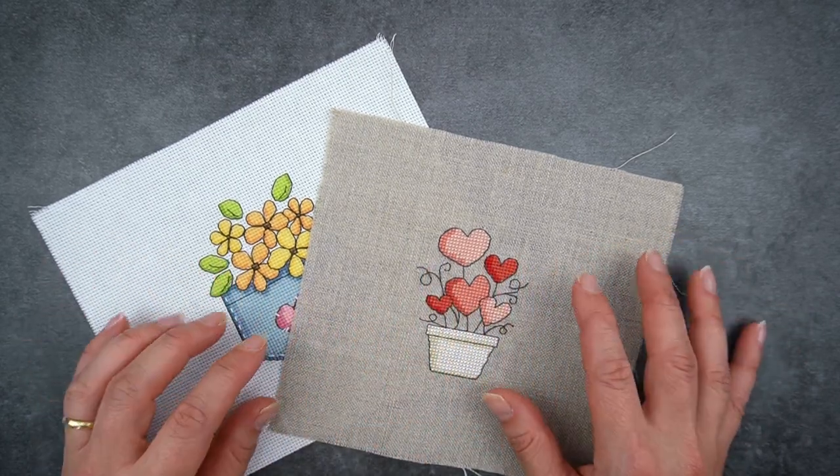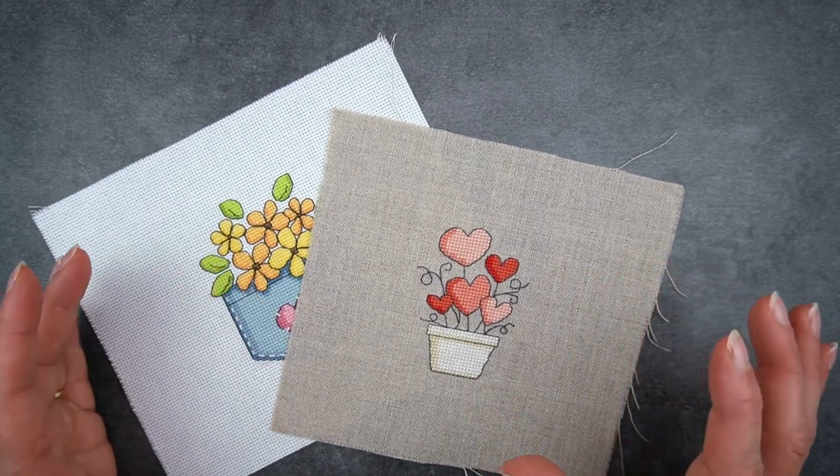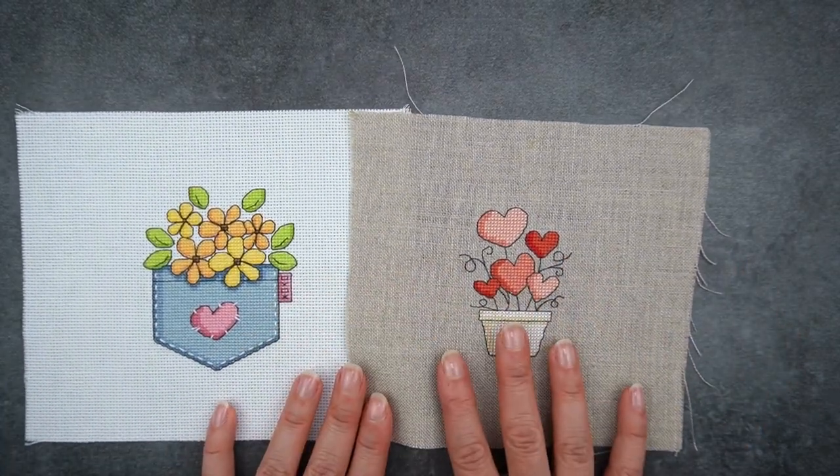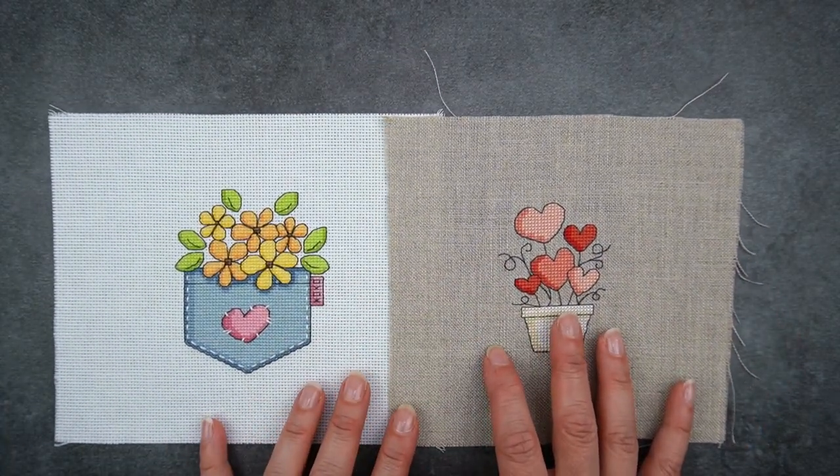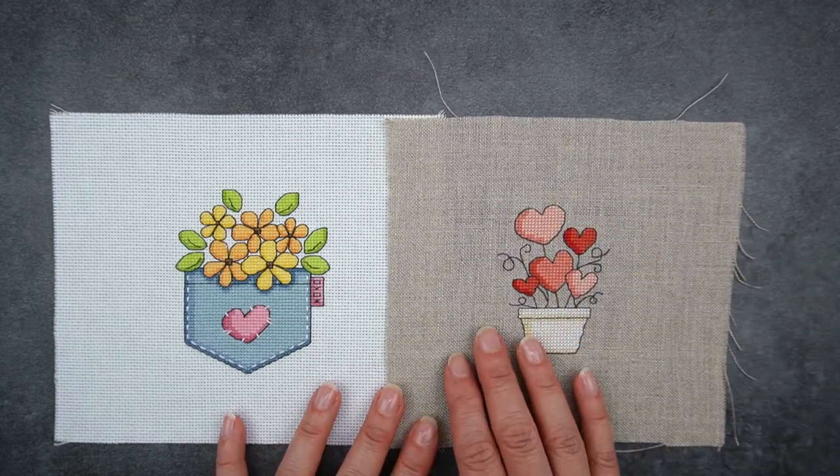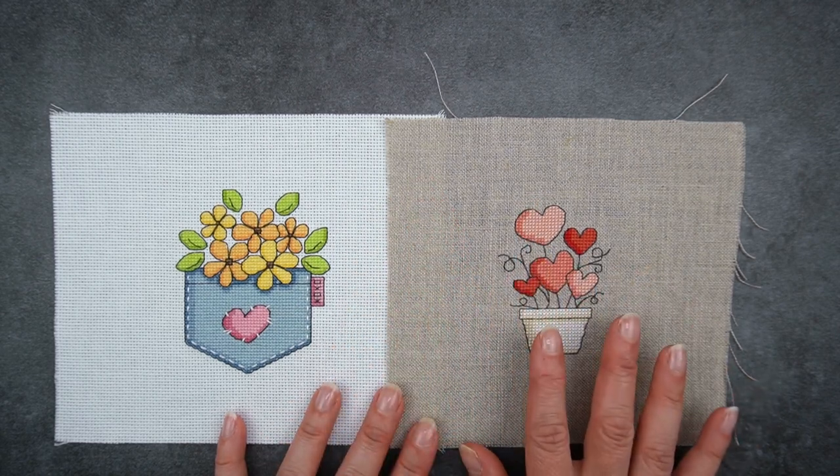So why would you want to use even weave or linen rather than Aida? Well mainly because of the way it looks. If we compare these two here and I realise they're on different colours but the background fabric tends to feel a bit less visible with linen or with even weave than Aida because you can't really see the holes as much.